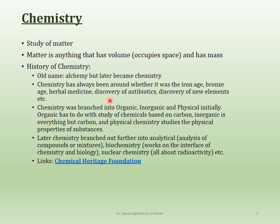Chemistry has been around for a long time in different places for different uses. For example, there was the iron age and the bronze age, which were defined by chemistry. Iron age is dependent on iron as a metal, and bronze is a mixture of two metals.